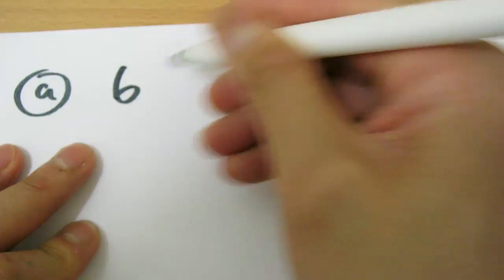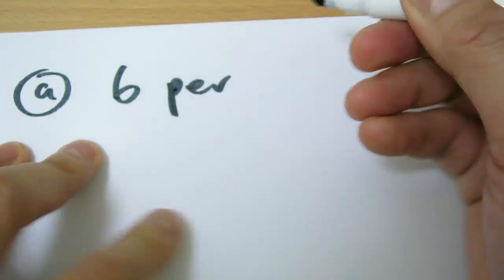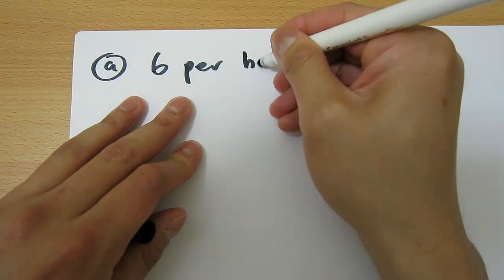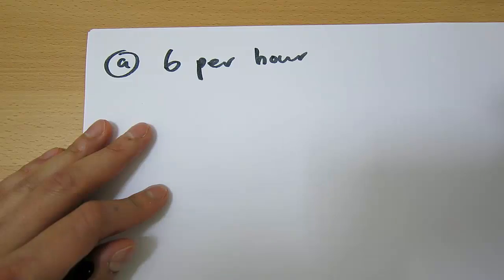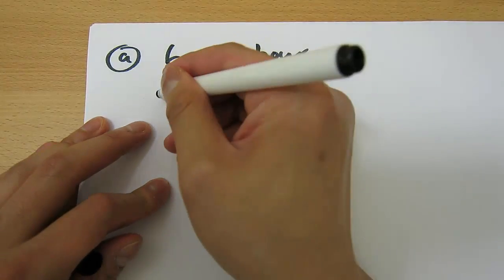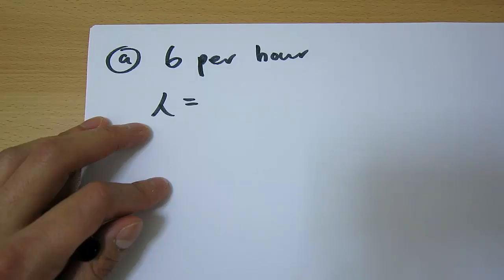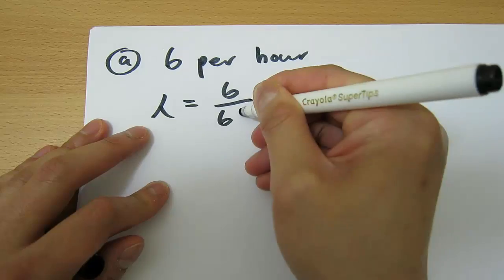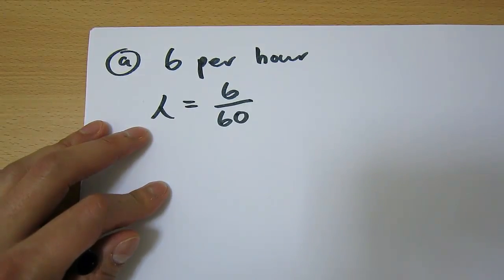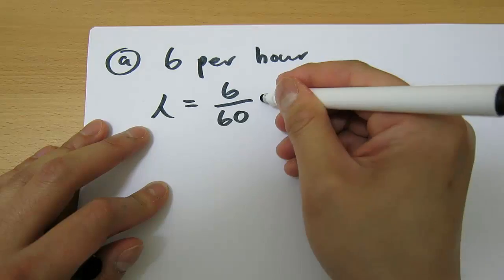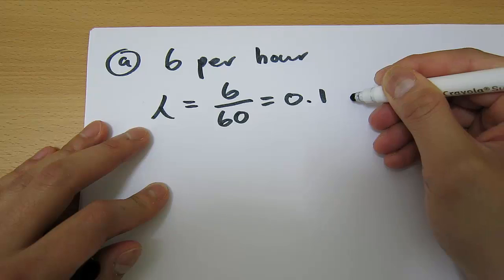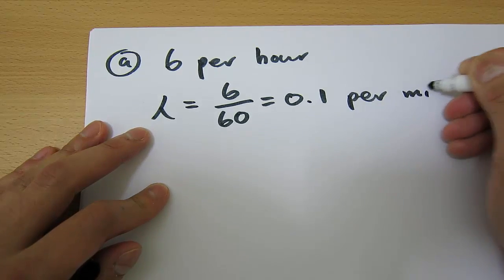For question A, we're told that the checkout person sees on average 6 customers per hour. Our lambda has to be in terms of per minute, so lambda equals 6 divided by 60, because there are 60 minutes in one hour. Therefore lambda equals 0.1, meaning we see 0.1 customers per minute.